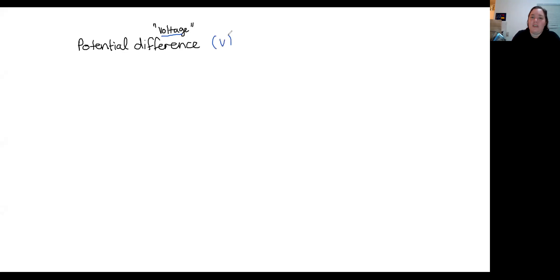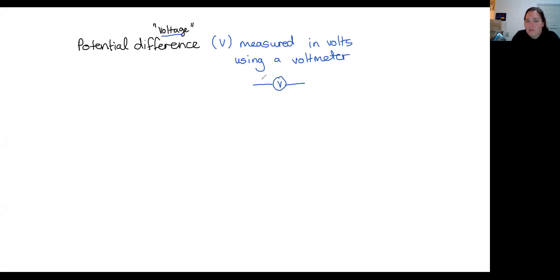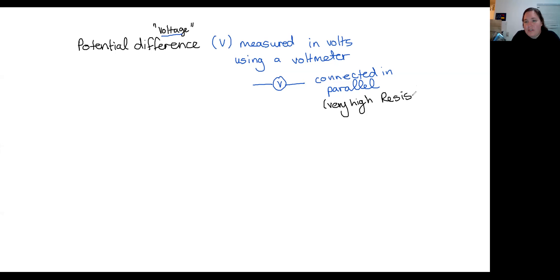Potential difference has the symbol V and it is measured in volts using a voltmeter. It's shown with the symbol V in a circle and it is always connected in parallel. Your voltmeter is always connected in parallel because it has a very high resistance, and if you connected it in series it actually functions as an open switch and nothing works. So if students ever put together circuits and they moan that things don't work, it's probably that they've connected a voltmeter incorrectly in series instead of in parallel.